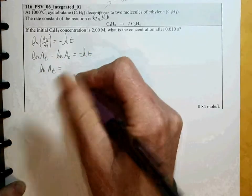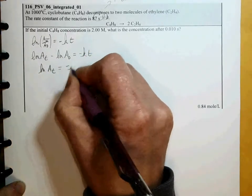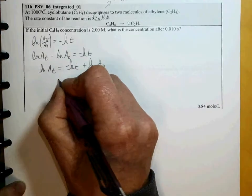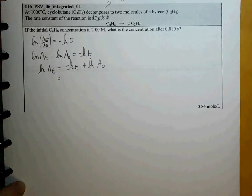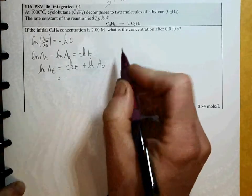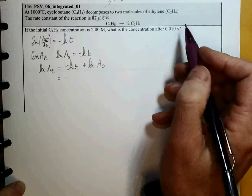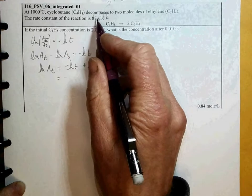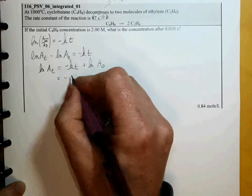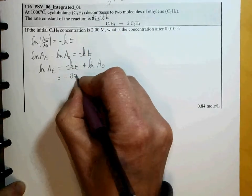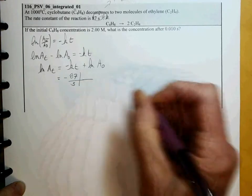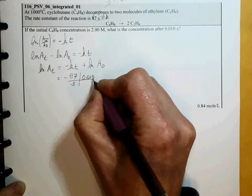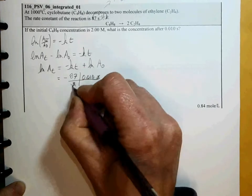And solve for ln A and substitute our values in. Negative, we find K, that's 87 reciprocal seconds. And our time is given to us as 0.010 seconds. So our units cancel out.